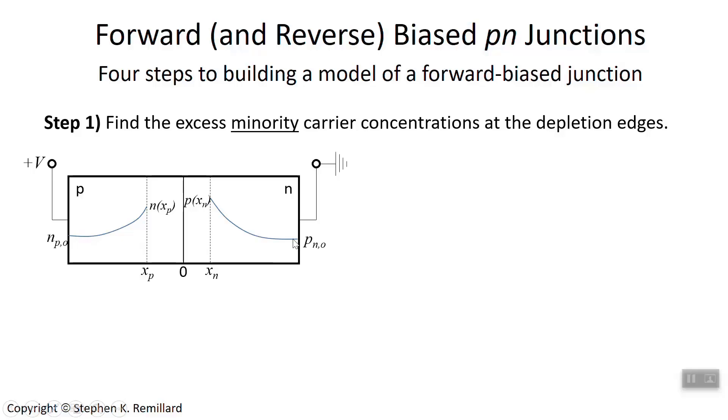P sub N0 is also the hole concentration far away from the junction, so in thermal equilibrium. P at X sub N is the hole concentration at X sub N.